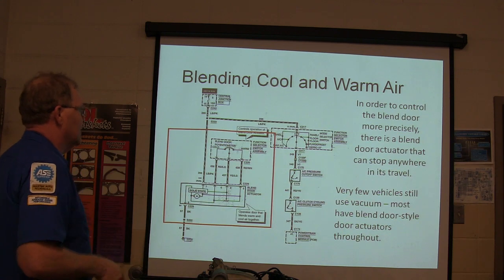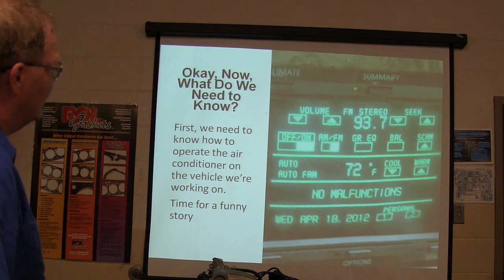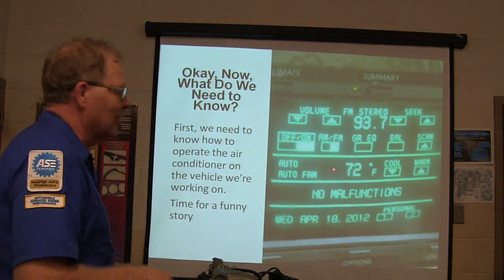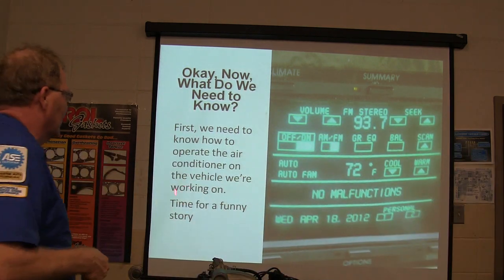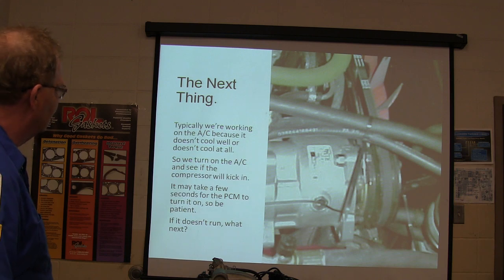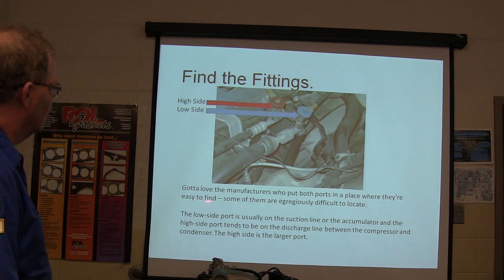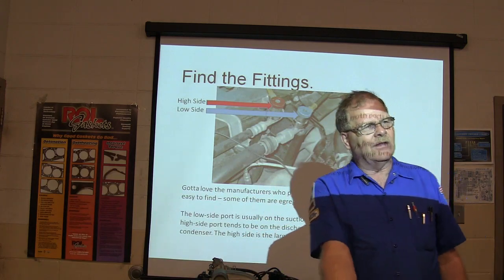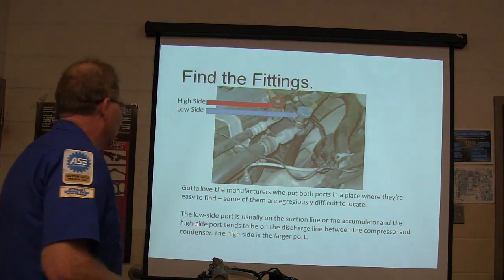Very few vehicles use vacuum anymore. That's what a vacuum door actuator looks like — I hated those things. When working on an AC that doesn't cool, turn it on and see if the compressor engages — it may take a few seconds, so be patient. Then find the charge fittings. I love when the manufacturer puts both ports somewhere easy to find, but on one Jaguar the low-side fitting was underneath the car behind the tire on the passenger's side — use the shop manual.